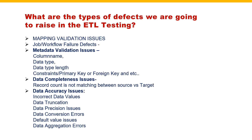For example, you are having a source table with 10 records. As per business logic, it has to load 10 records, but it is loaded only 5 records. As per the mapping document, all the data present in the source system has to load into the target. But here it is loading only 5 records - you are expecting 10, but it is loading only 5, which means it is mismatching. Then we can consider it as a defect.